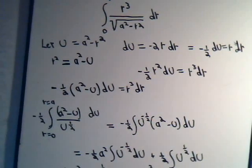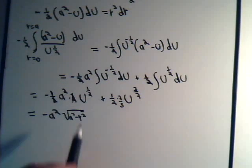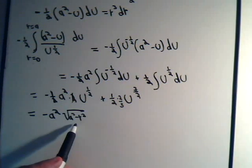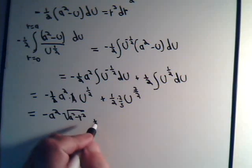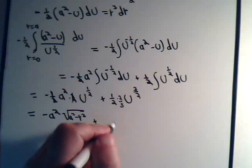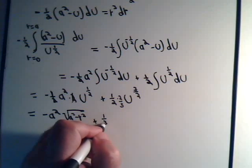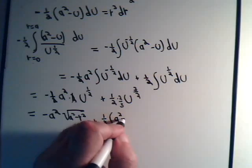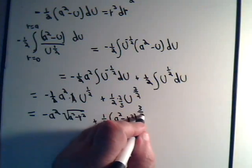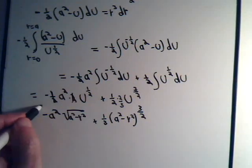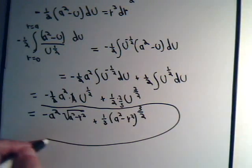U is this. So we're going to have square root a² minus r². U is a² minus r². That was our original substitution. Plus it looks like one third a² minus r². And the whole thing is raised to the three halves power. So this is our solution.